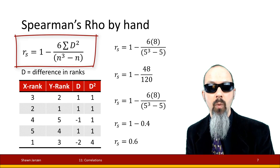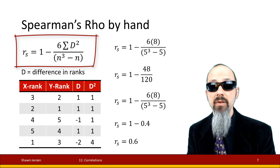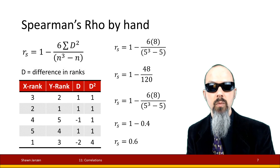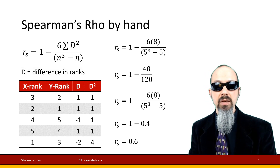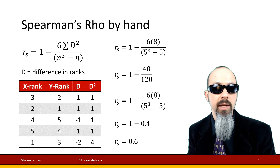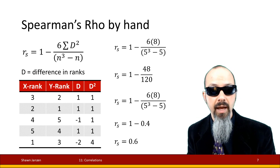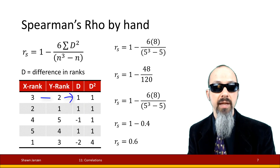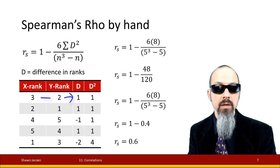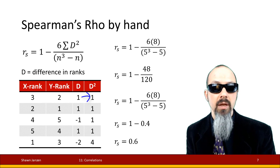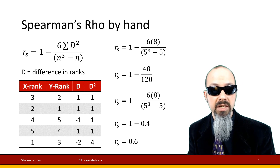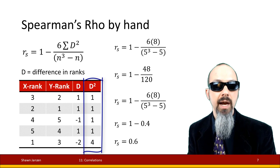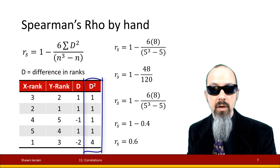The formula is: 1 minus 6 times the sum of the rank differences squared, divided by n cubed minus n, where d represents the differences in ranks. In the table, we have x rank and y rank carried over, and d is the difference between them. The first pairing, rank 3 minus rank 2 gives a difference of 1, and d squared — 1 squared is 1. We go down the table calculating d squareds, then sum that column. The sum of the d squareds adds up to 8.